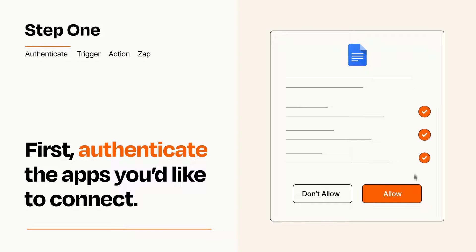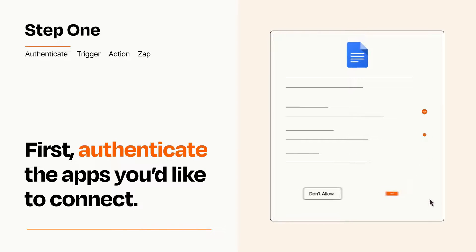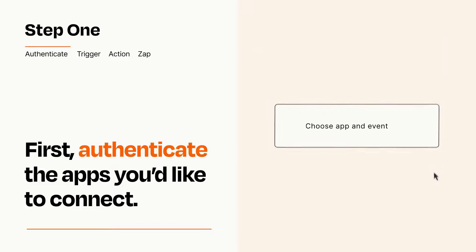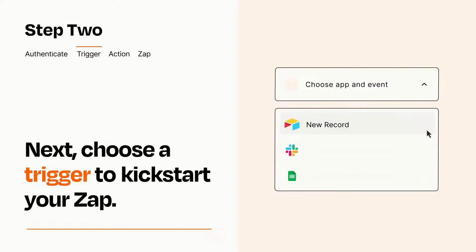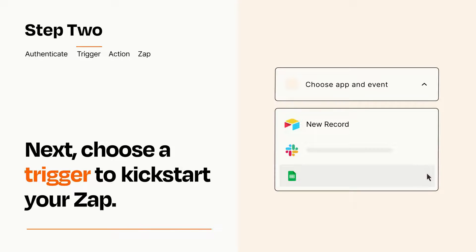Zapier meets industry standards for encryption when connecting with each of your apps. Now let's set up your trigger, which is the event that starts your Zap. Pick the trigger event that you want from the list.